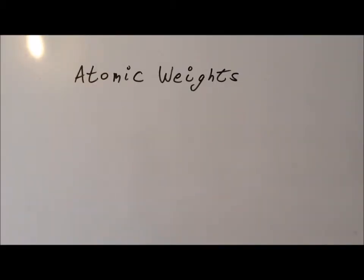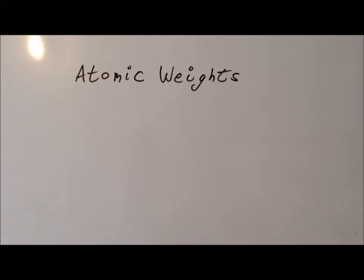Hello. In this video, we are going to be doing several calculations involving the atomic weights of elements. The atomic weight that you will see listed on the periodic table for each individual element is a weighted average of the weights of the isotopes of which that particular element is found. So we can think of the atomic weight as just an average.